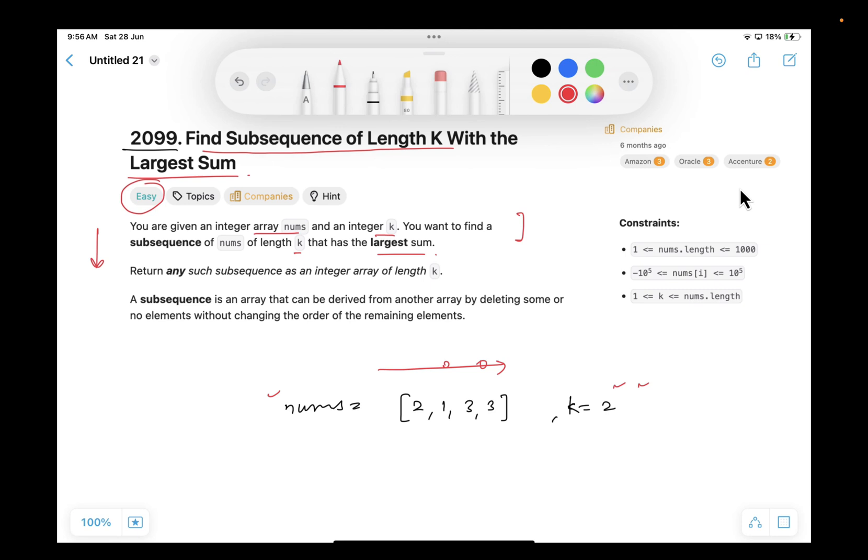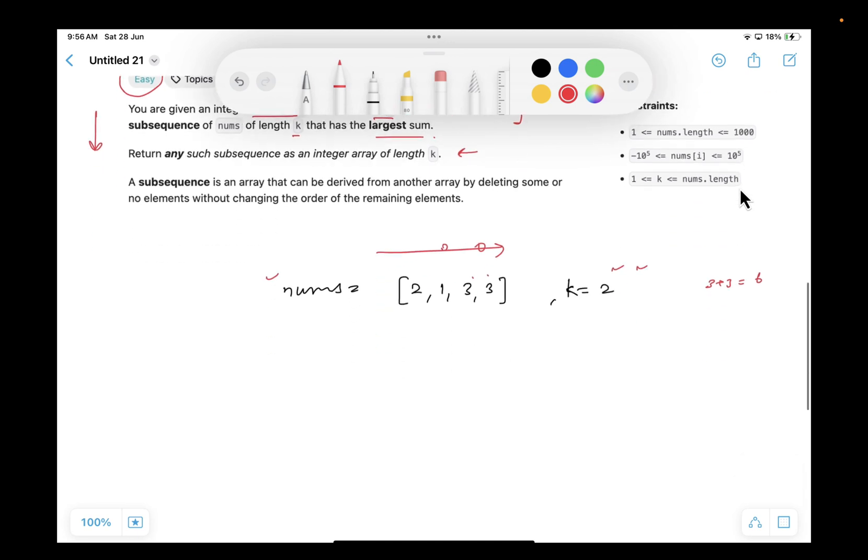just pick any two items such that the sum of those two items should be largest. In this case, we can directly see that if we are picking this 3 plus 3, this sum is the largest. And what we have to return? Any such subsequence as an integer array. The return type should be something like 3, 3. This array is something we have to return, not the sum.